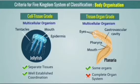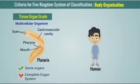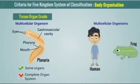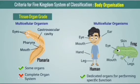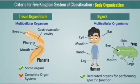Some multicellular organisms have specific organs; examples are human and frog. They have well-developed organs that perform various functions. This is called organ system level of organization.